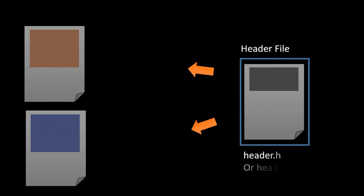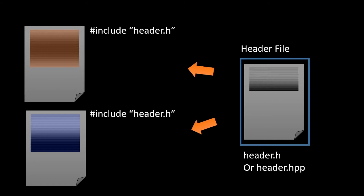Header files can have extensions .h or .hpp depending on needs. In C language, .h is mostly used; in C++, .hpp is used. You can use any extension but following convention is good practice. We tell each source file with the include directive to include the header .h file, and this is done using the preprocessor, not the actual compiler. Now let's jump into Sublime Text to see how header files actually work and how we can make our own.